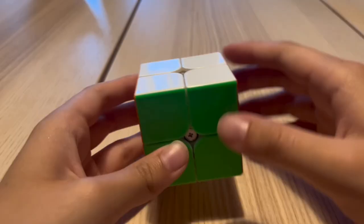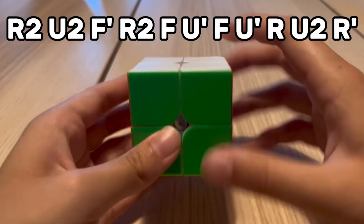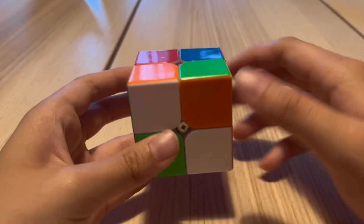And for his final solve, Zayn got a 1.16, plus two. This is the solve that cost him the sub-1 world record average. So Zayn starts with a Z rotation, he does a R, F', R', U, R, U'.